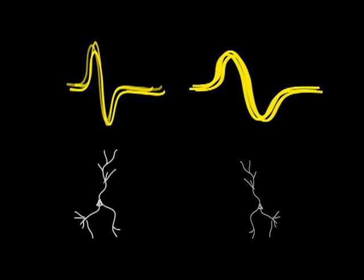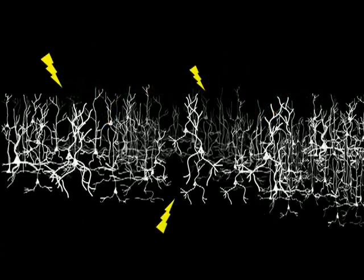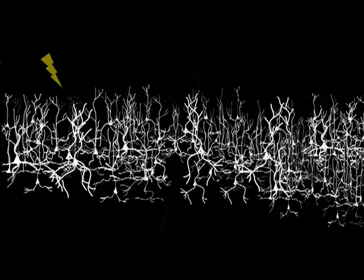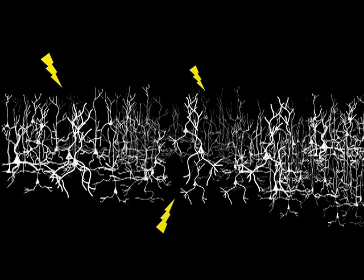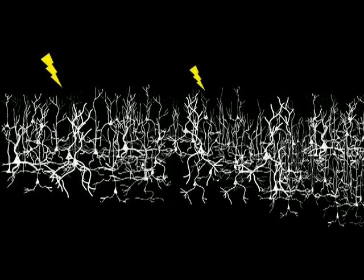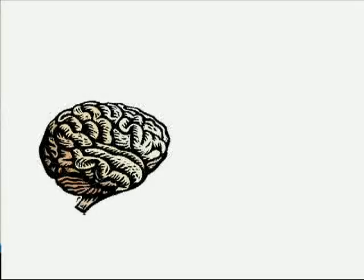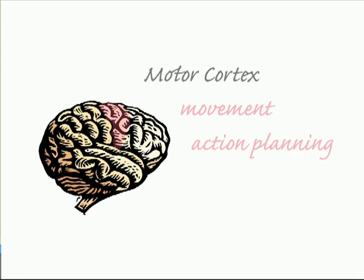How do we know which cells respond to a stimulus or thought? Let's record their electrical activities and give this a shot. Using electrodes, we listen to motor cortex cells, important for action.